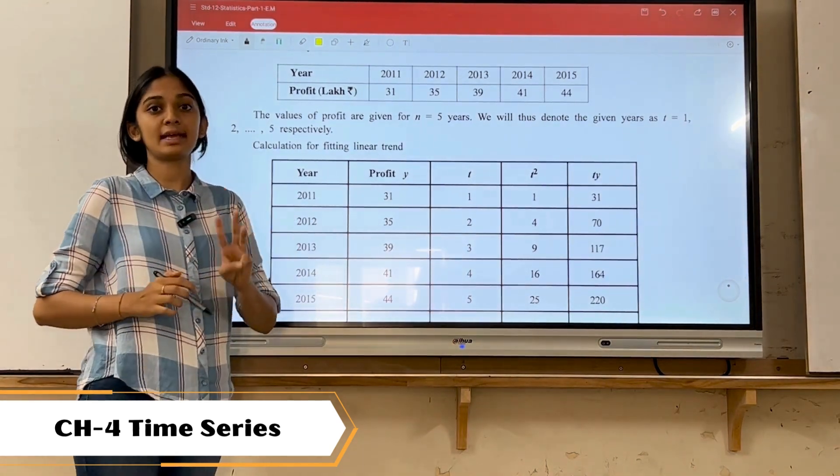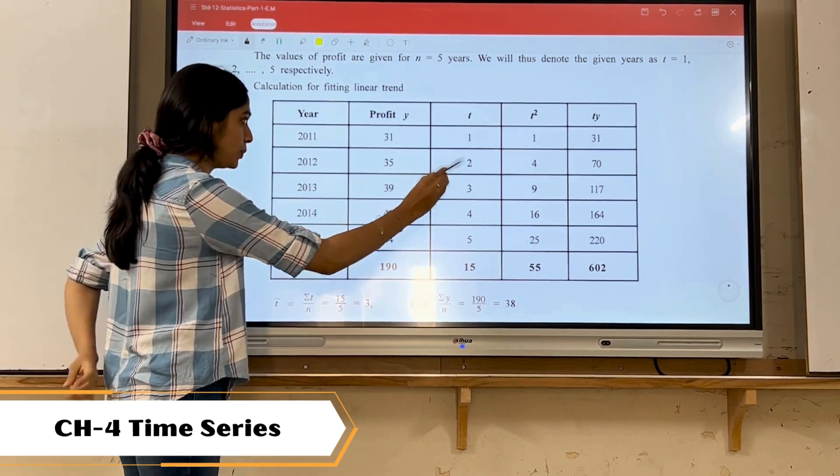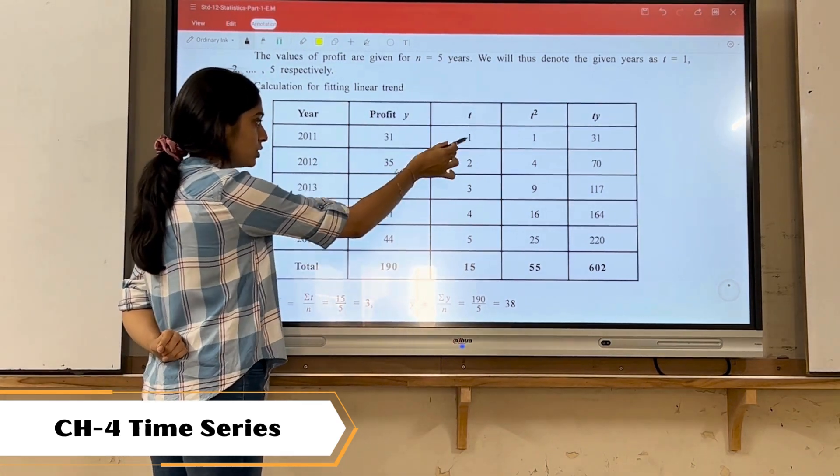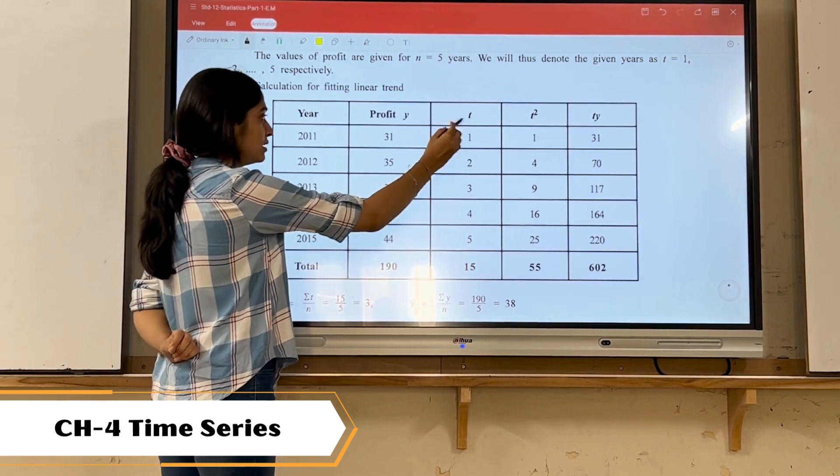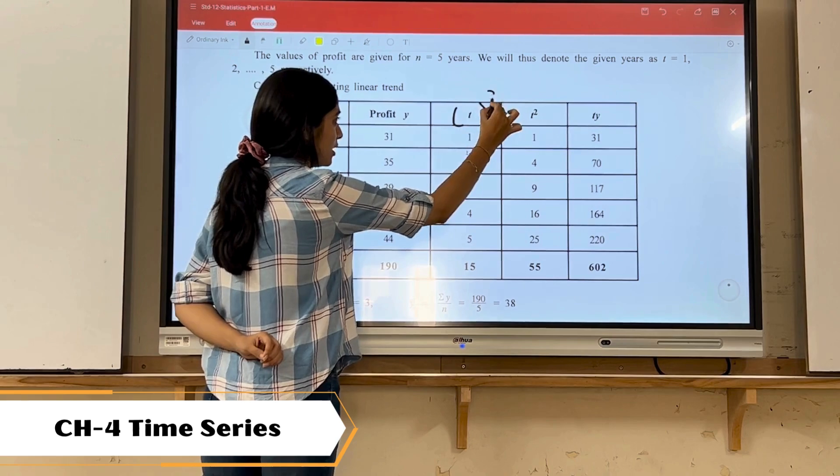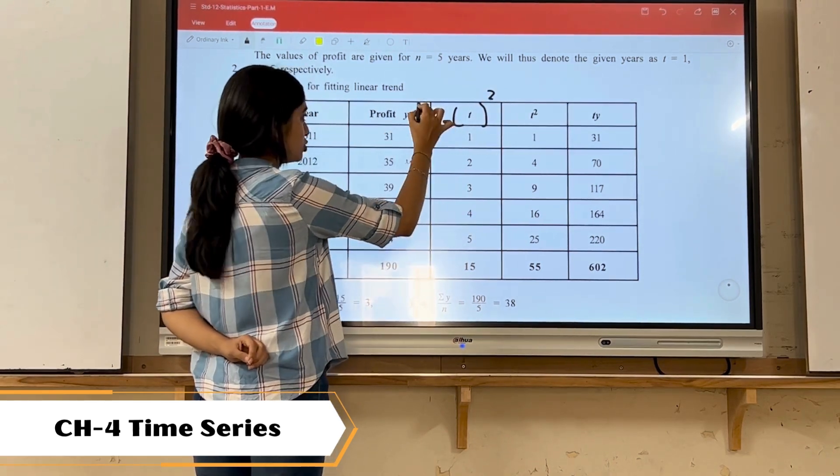In this method, three extra columns we need to prepare: one is p, t square, and p y t. Here we are arranging in chronological order: 1, 2, 3, 4, 5. Y is our profit which is already given in our question. P square is the square of time variable. P y is multiplication of t and y.